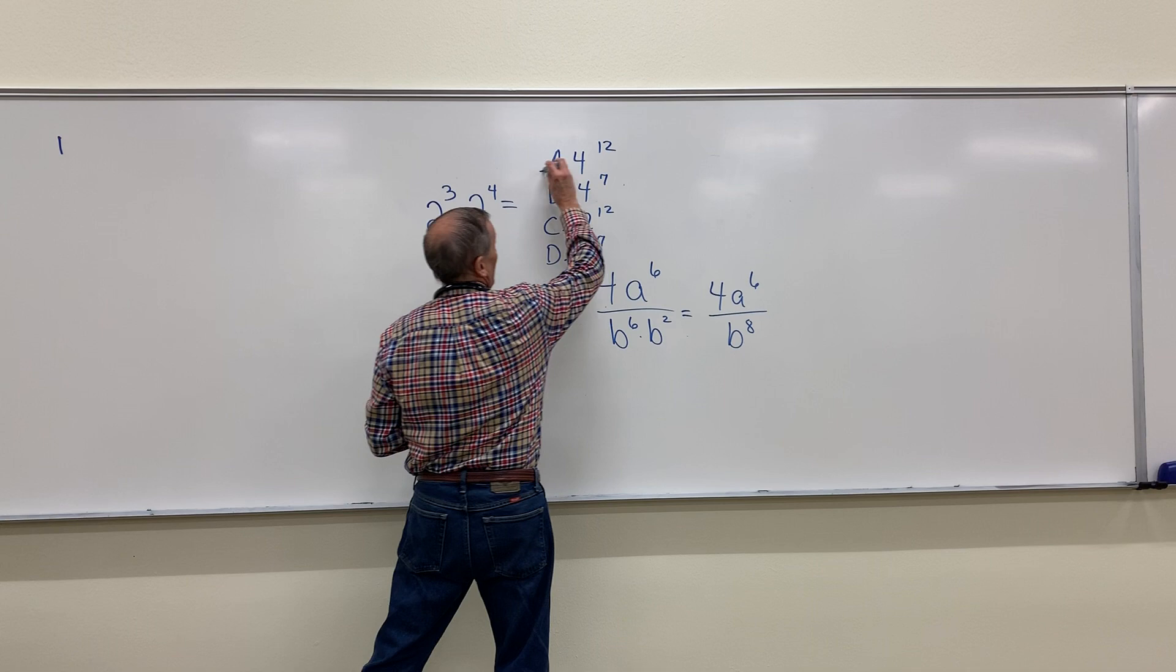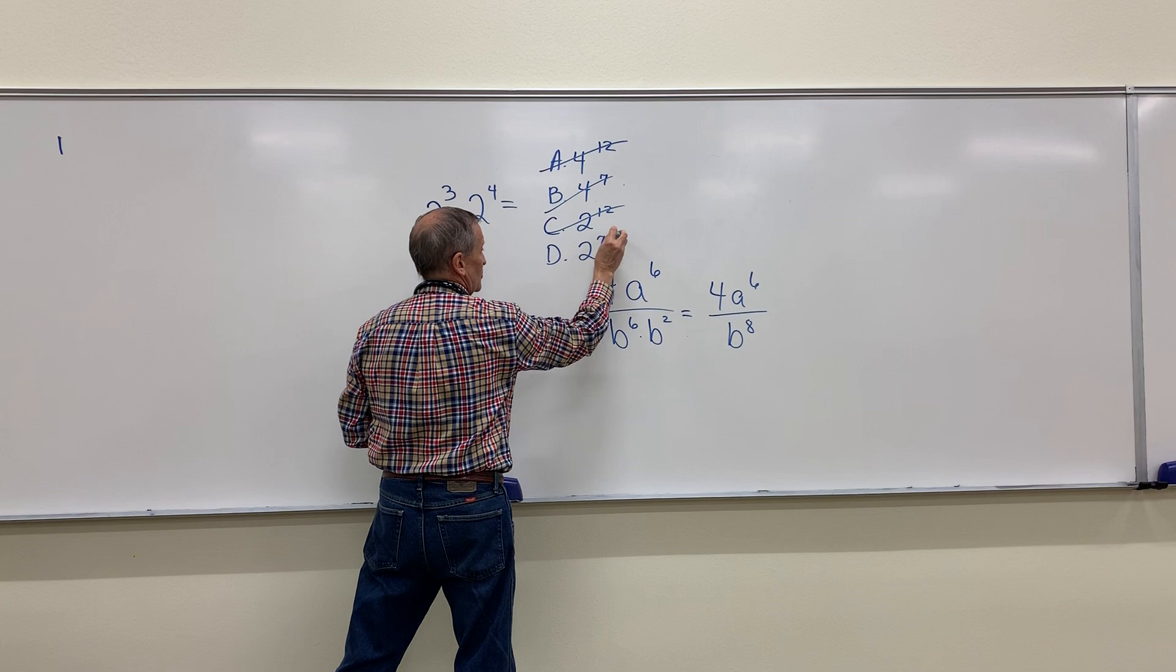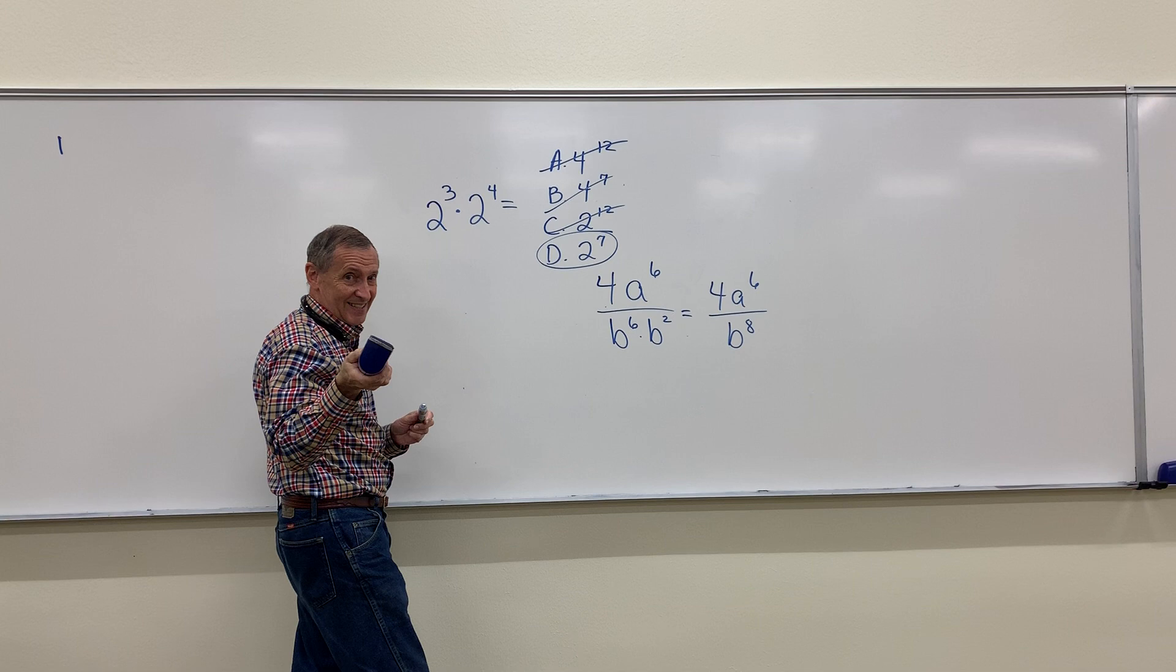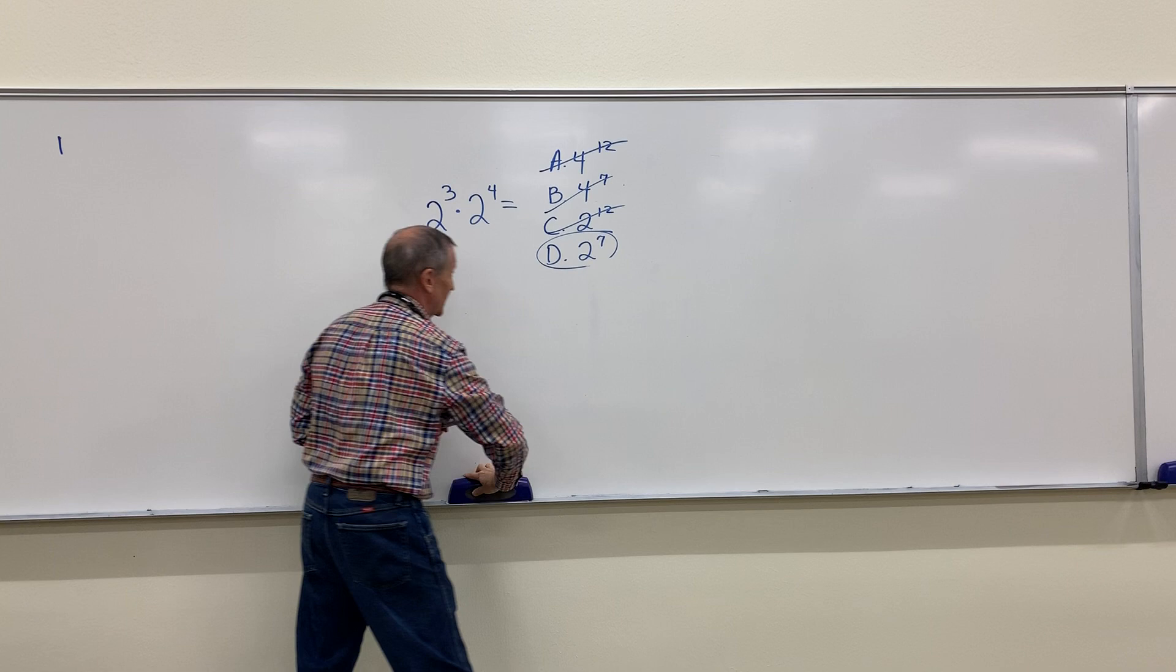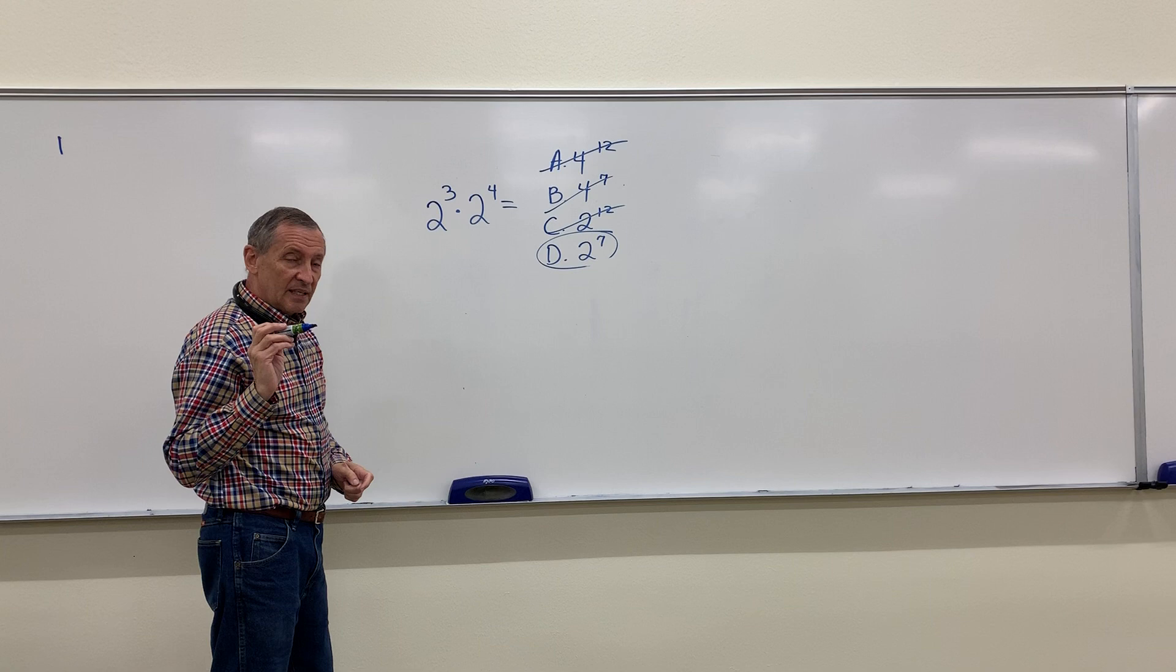The question is, is it going to be 4 to the 7th or 2 to the 7th? The answer is, it's going to be 2 to the 7th. Now if you were thinking 4 to the 7th, which to be honest, many of you were. If you were thinking of 4 to the 7th, you were thinking like this. Hey, I add my exponents, sure, but 2 times 2 is 4, right? I mean, it used to be.